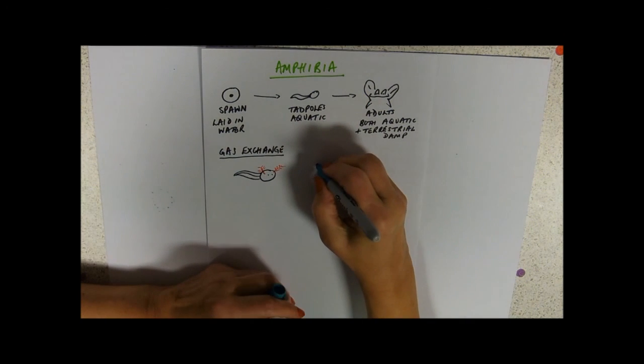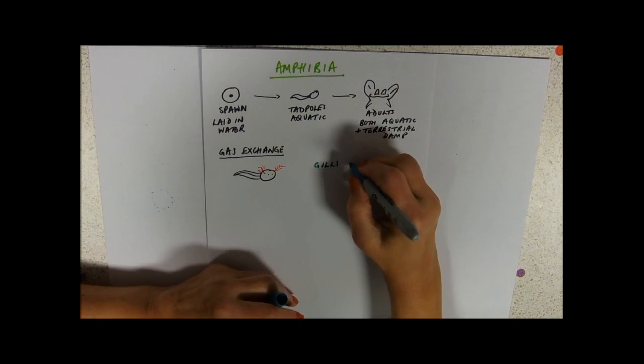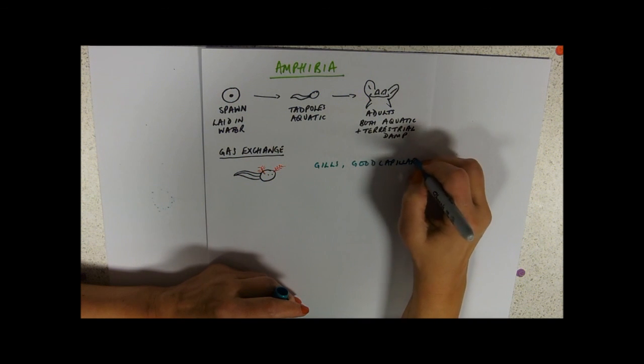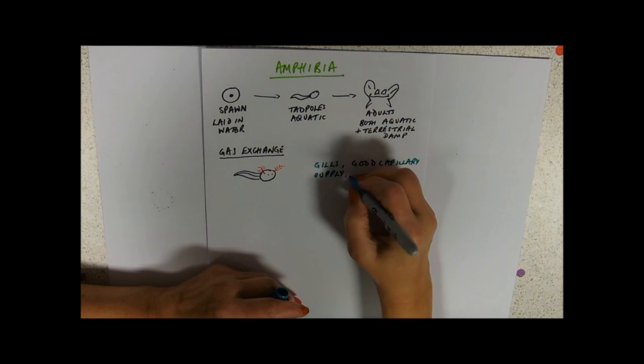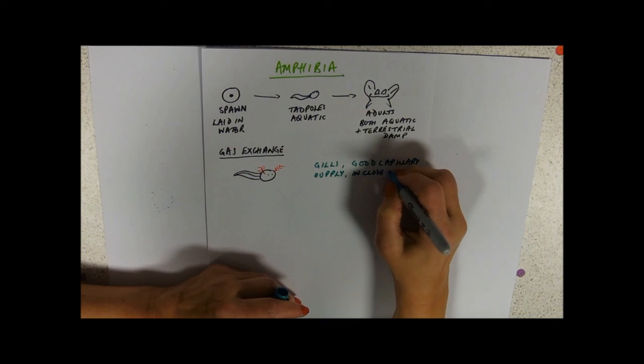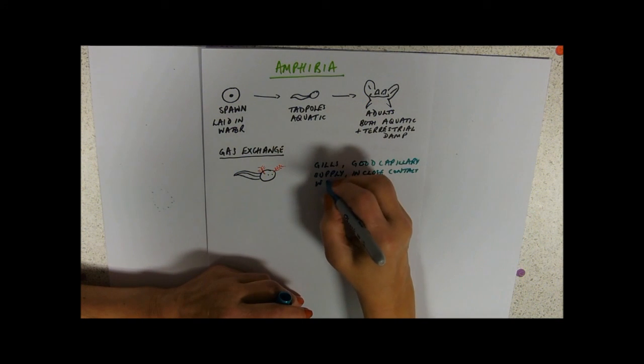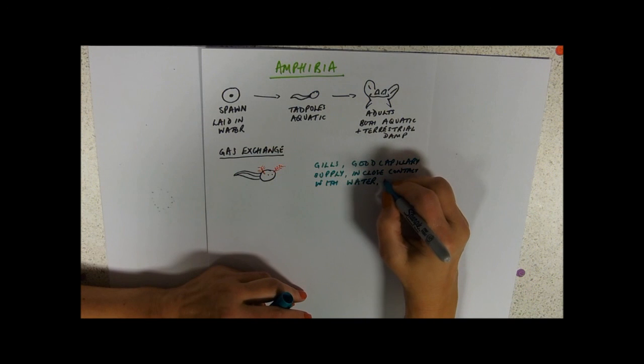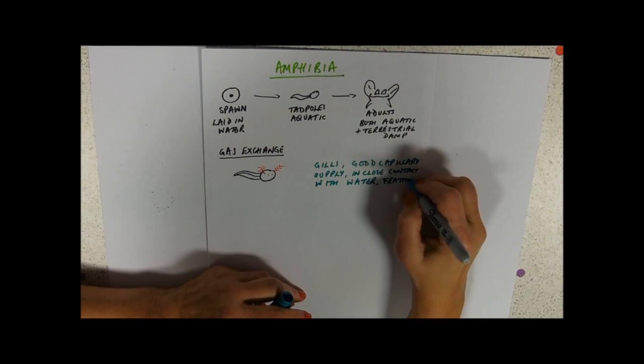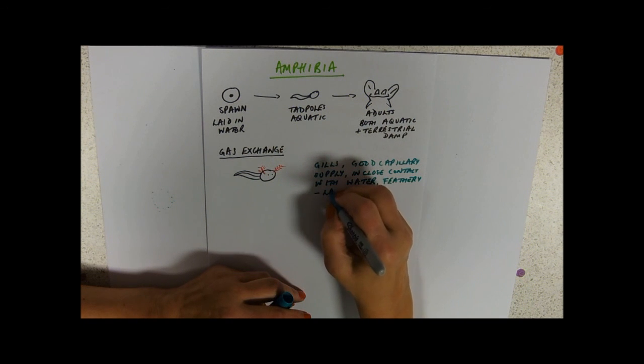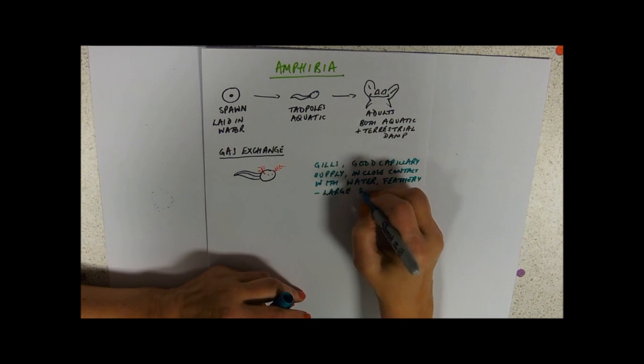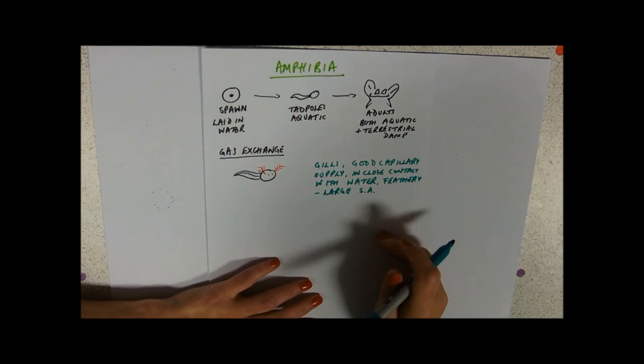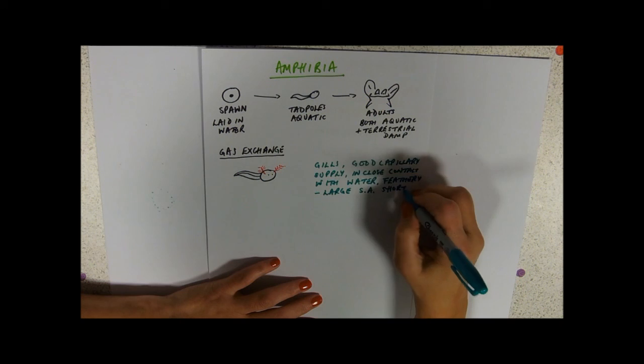So, adaptations. It's got gills with a good capillary supply in close contact with water. They're feathery or branched. So we've got a large surface area. I'm just going to abbreviate surface area to SA. Obviously in an exam you need to write out surface area brackets SA then you can use it. And it's got a short diffusion path.